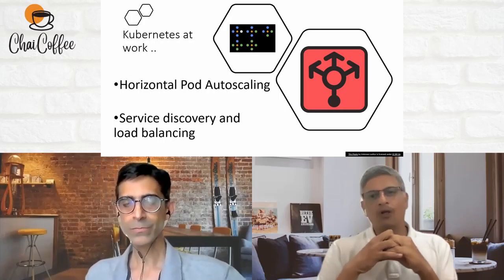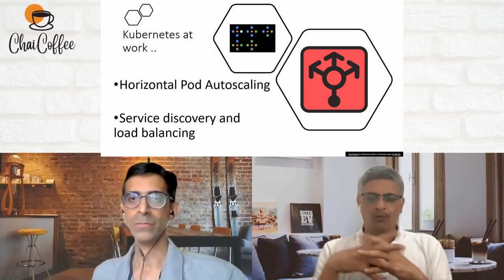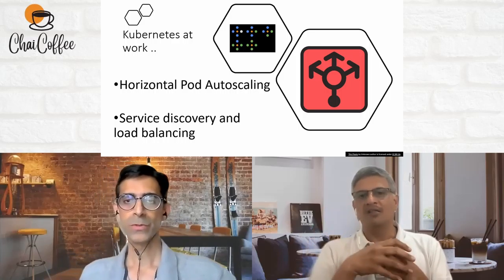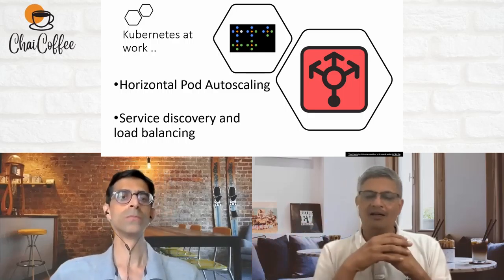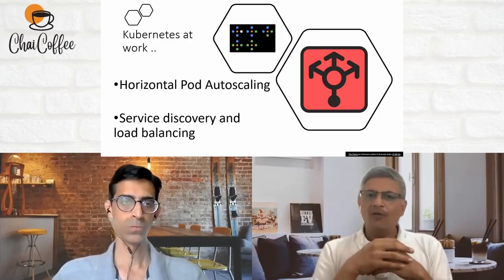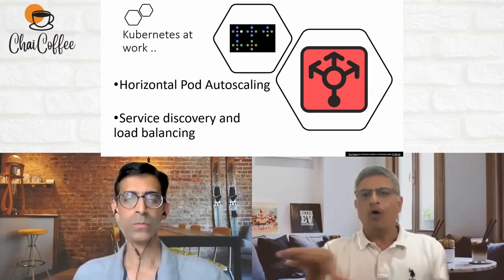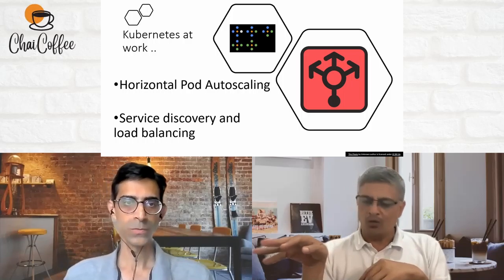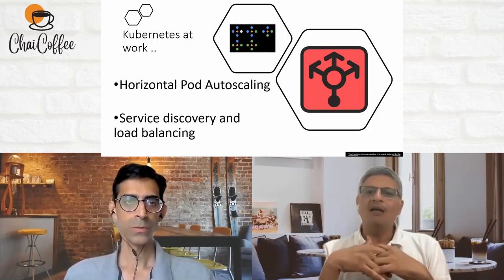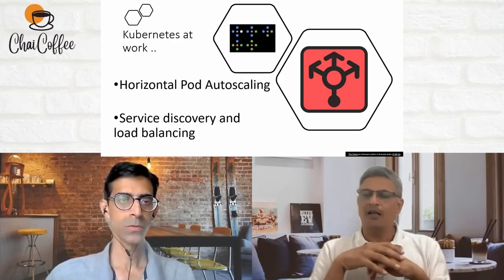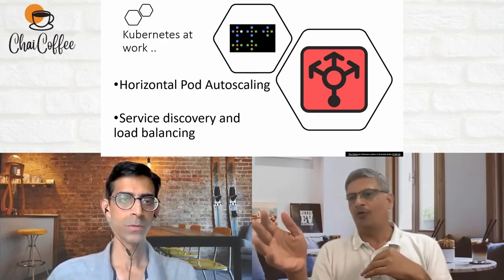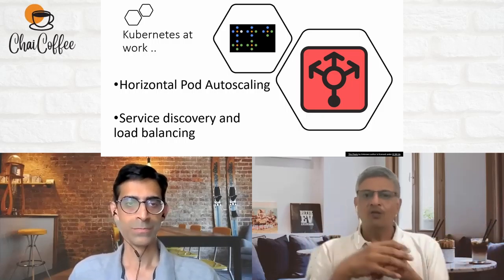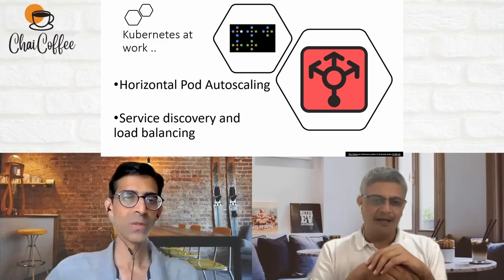Kubernetes supports horizontal auto-scaling. If it realizes you're reaching a limit and load is increasing, it adds a new node and starts deploying pods onto it, increasing your infrastructure horizontally rather than increasing the power of a single machine. But it's not just scale-up — when load comes down, Kubernetes checks if pods are underutilized and may remove a node from the cluster, moving that load to other nodes that are managing the workload.